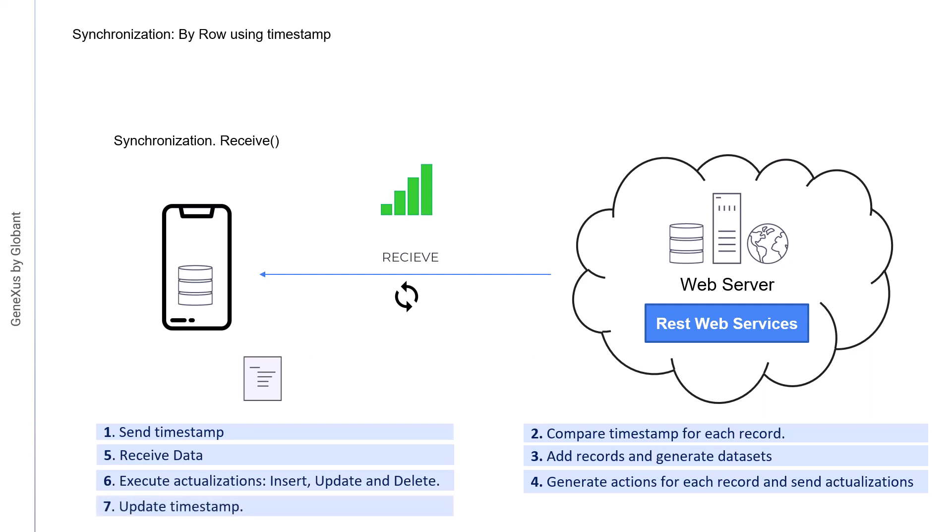The disadvantages of this mechanism are that the developer is responsible for maintaining the timestamp and the logical deletion mark. In addition, we can't physically delete records in those tables. This mechanism can be used together with the previous one — by row using hashes.